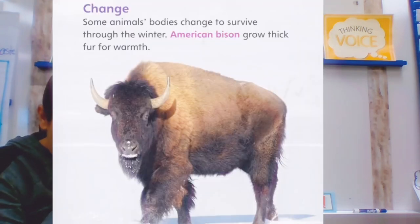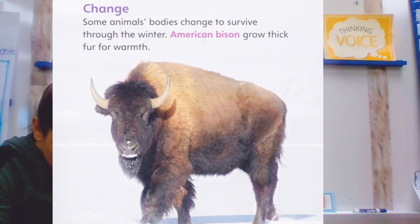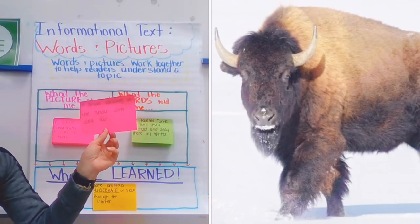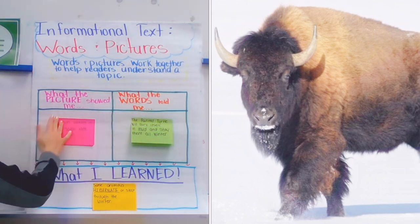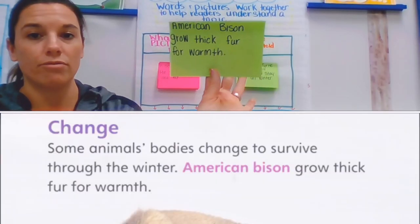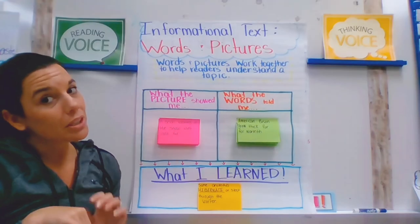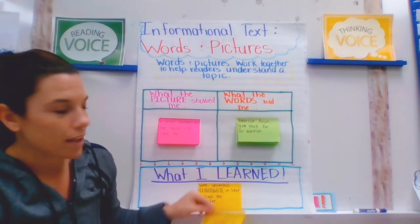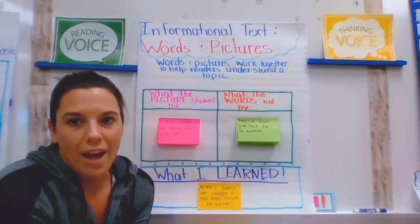The last section on the launch page says "change." Some animals' bodies change to survive through the winter. American bison grow thick fur for warmth. The picture is showing me a bison walking in the snow with long fur. The words told me that American bison grow thick fur to stay warm in the winter. So using the picture and words together, I learned that some animals' bodies change — like the American bison, whose body changes from having short fur to long, thick fur to help it survive the winter.